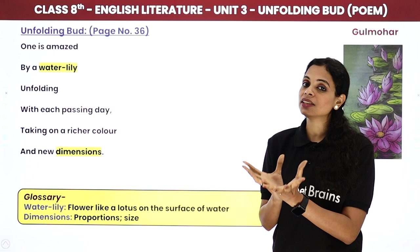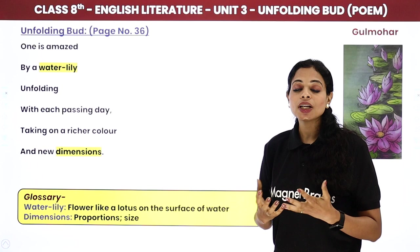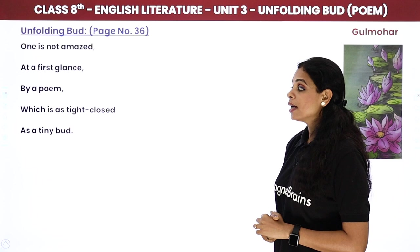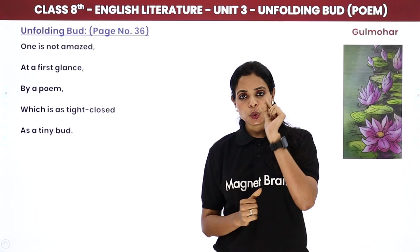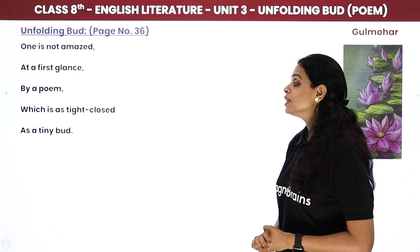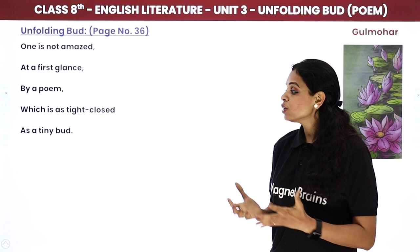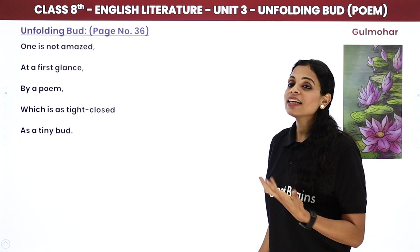Any person who watches the water lily's bud every passing day will be amazed to see how its dimension and rich color change. 'One is not amazed at a first glance by a poem which is as tight and close as a tiny bud.' When you first see a kali — small, fully covered with green-colored leaves — you feel no surprise, no amazement, no fascination. The poem here is being compared to a tightly closed bud about which you know nothing.